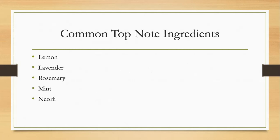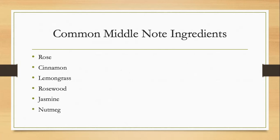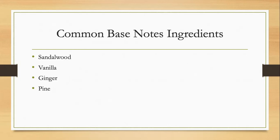Now, what are the other ingredients included in perfume? For the top note, the common ingredients used are lemon, lavender, rosemary, mint, and yuzu. The middle note ingredients include rose, cinnamon, lemongrass, rosewood, jasmine, and nutmeg. Base note ingredients include sandalwood, vanilla, ginger, and pine.